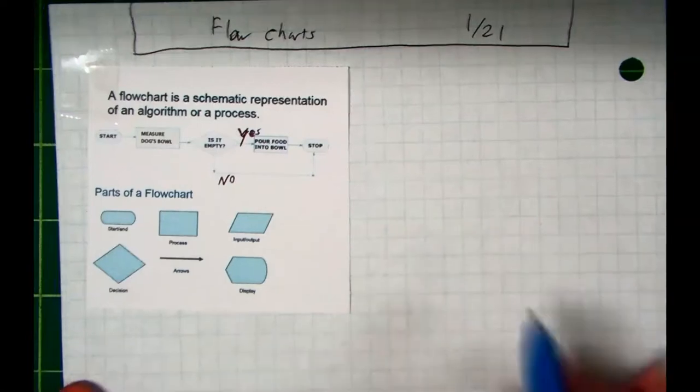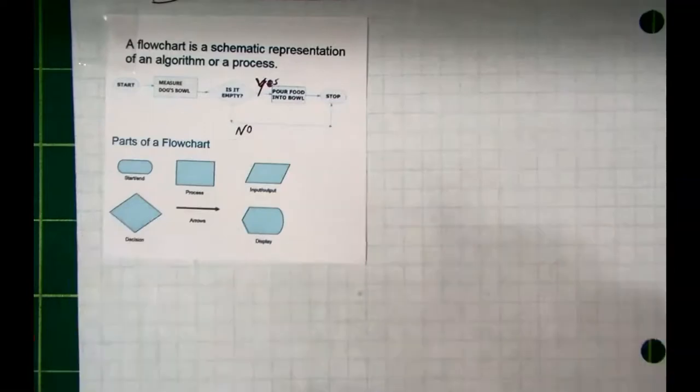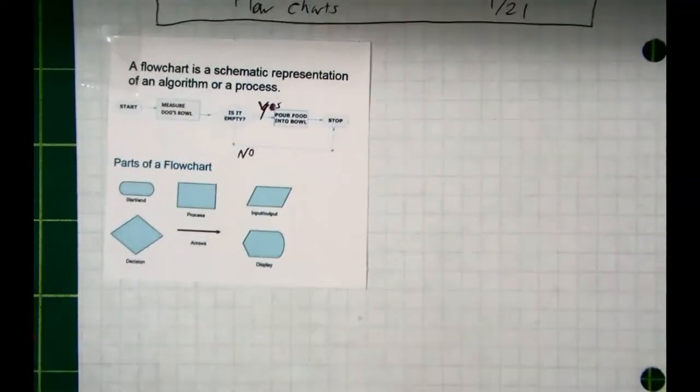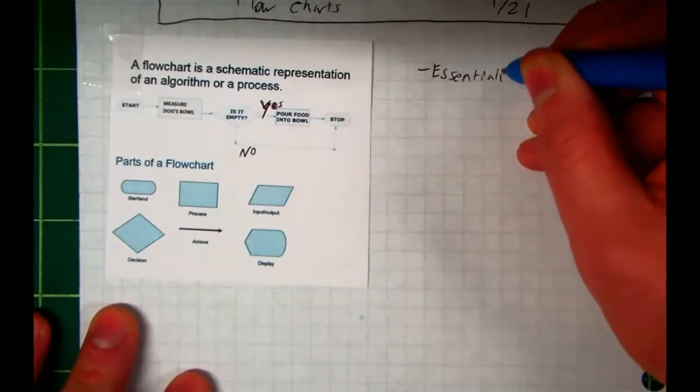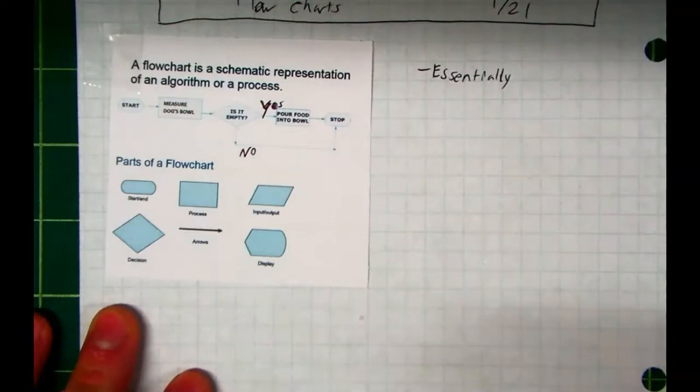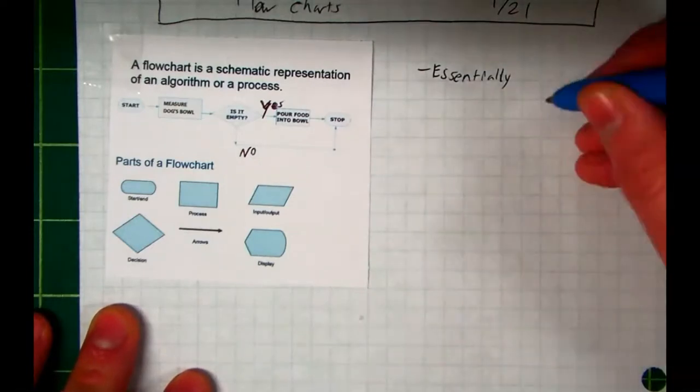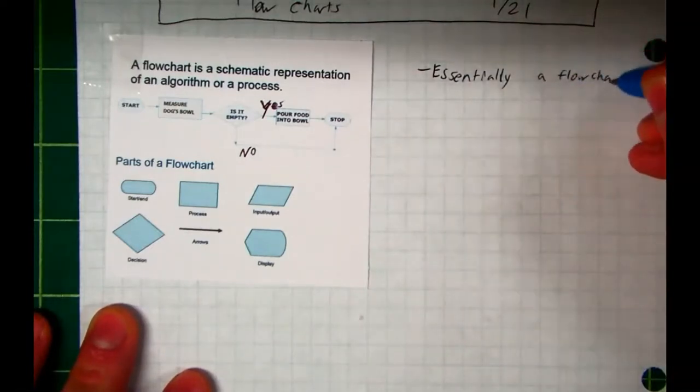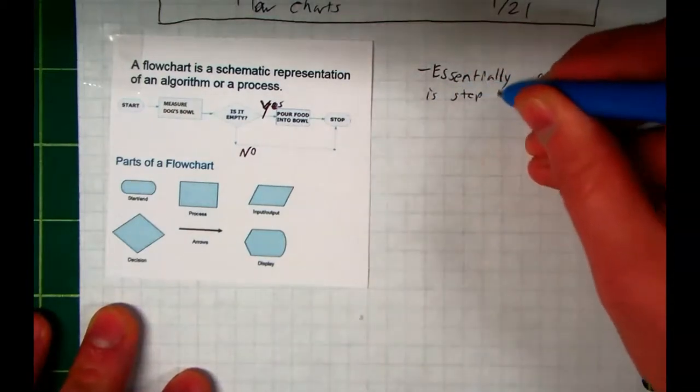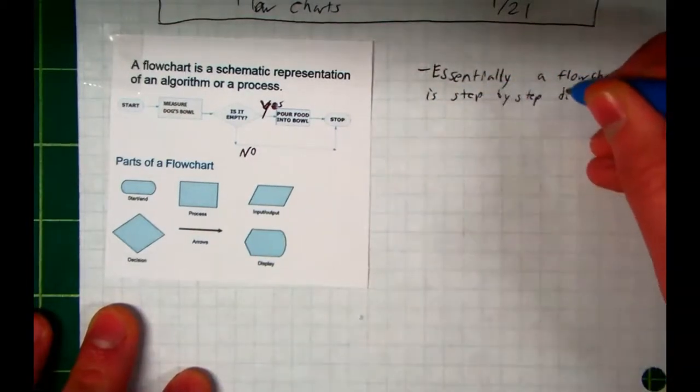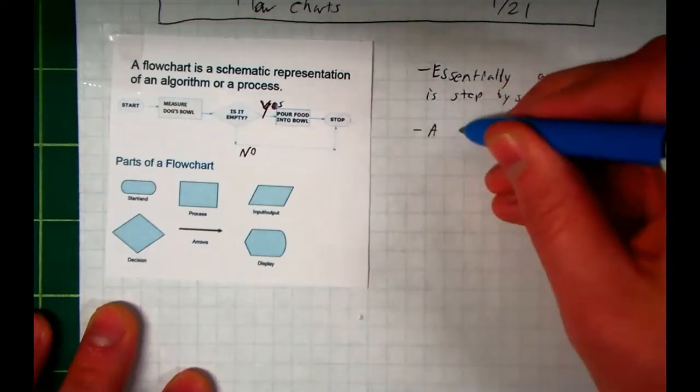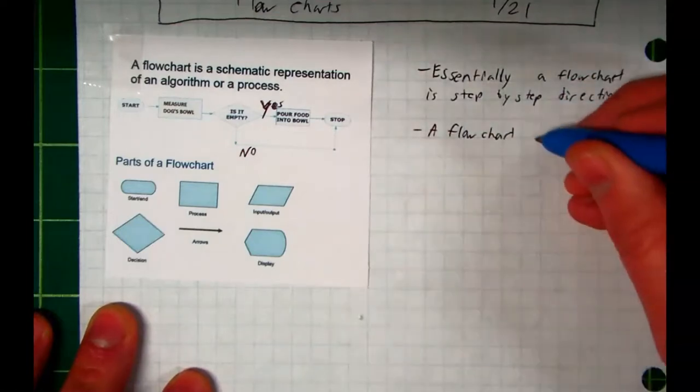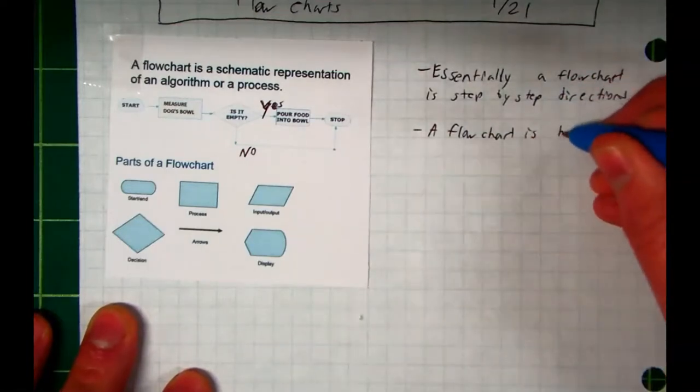Okay. So when you're dealing with flowcharts, there are a few symbols. We'll talk about those in a second. Let's define what a flowchart is and why we care. Essentially, a flowchart is a step-by-step set of directions. A flowchart is just how robots think.